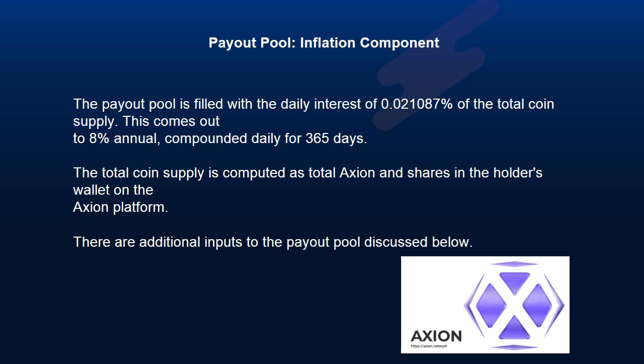The payout pool is filled with the daily interest of 0.021087% of the total coin supply. This comes out to 8% annual, compounded daily for 365 days. The total coin supply is computed as total Axion and shares in the holder's wallet on their Axion platform. There are additional inputs to the payout pool discussed below.